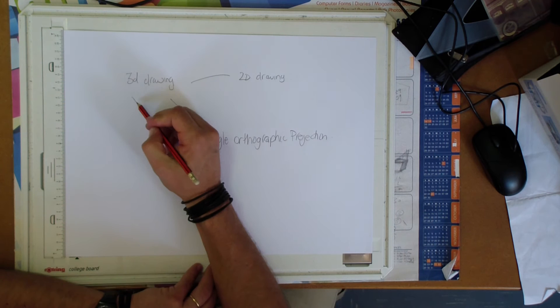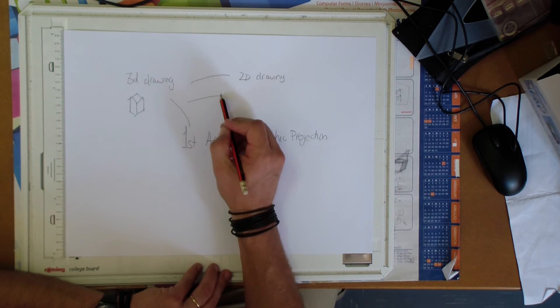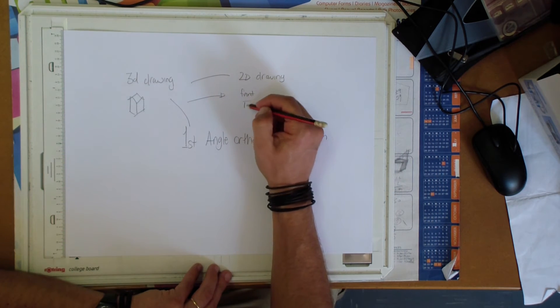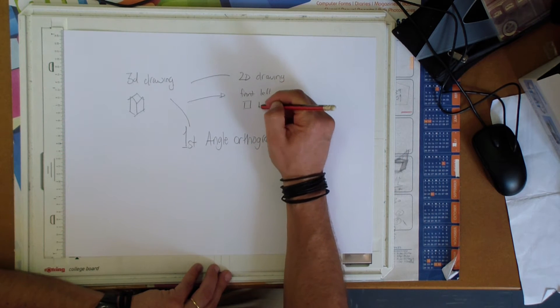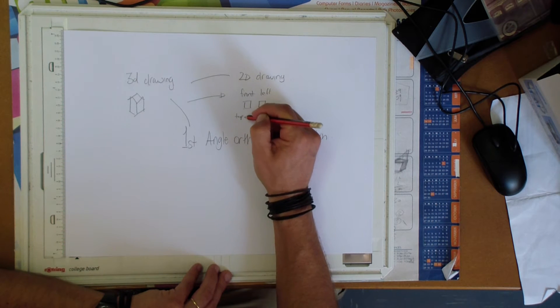So, we're looking at something much like an isometric cube. And we're going to translate that into something that shows our front, our left, and a top view.